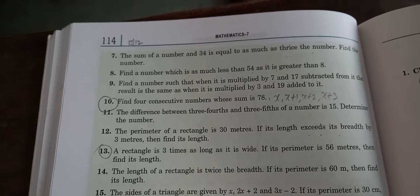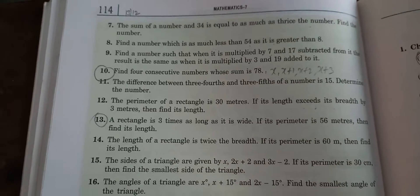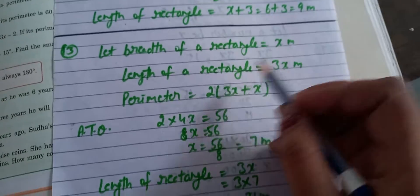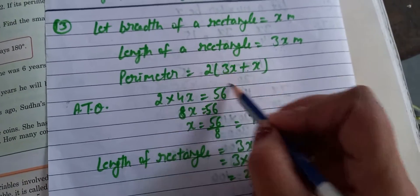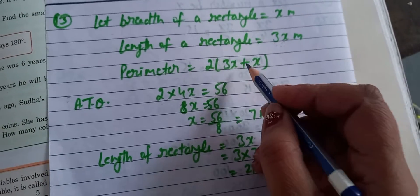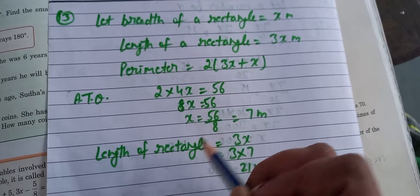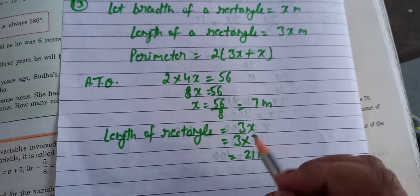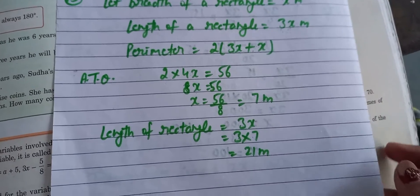Question number 13: A rectangle is 3 times as long as its breadth. उसकी length 3 times है उसकी breadth से, और हमें perimeter given है। Breadth of rectangle हमने x माना, length उससे 3 times — 3 से multiply 3x. Perimeter: 2 into (l plus b) — दोनों को plus किया 4x — perimeter 56 given है — दोनों को multiply किया 8x — 8 by में आ जाएगा — x equals 7 meter. Length of rectangle निकालनी थी — length थी 3x — x की value 7 — multiply कर दिया — length आ जाएगी 21 meter.